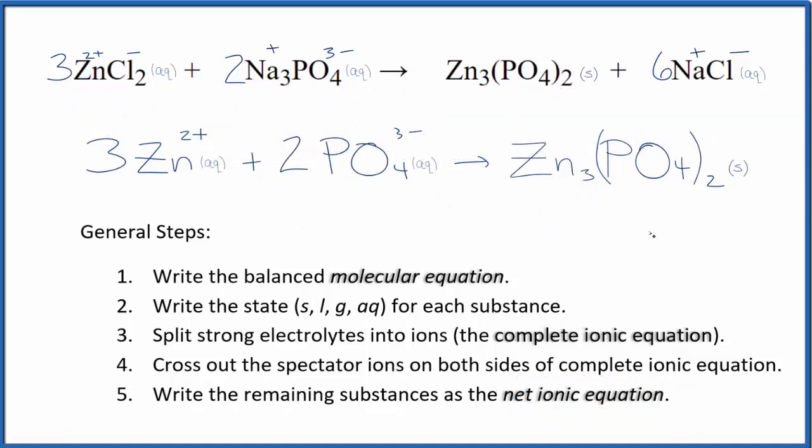So this is the balanced net ionic equation for ZnCl2 plus Na3PO4. The atoms are balanced if you count them up, and the charge is balanced too. Three times two plus, that's six plus. Two times three minus is six minus. So the net charge in the reactants is zero. This is a neutral compound. Net charge is zero.